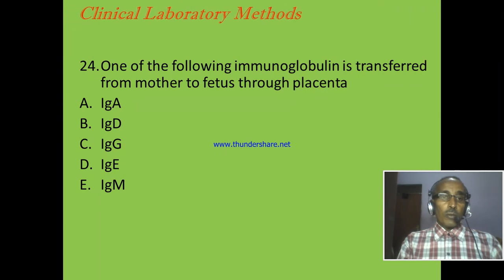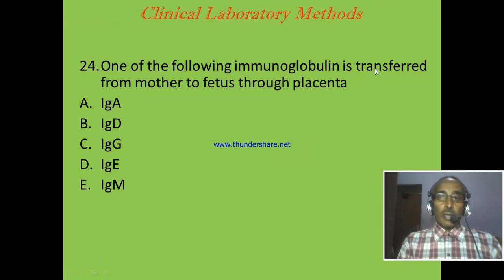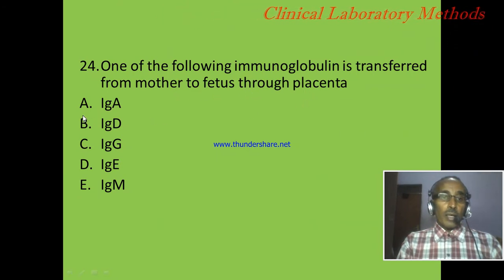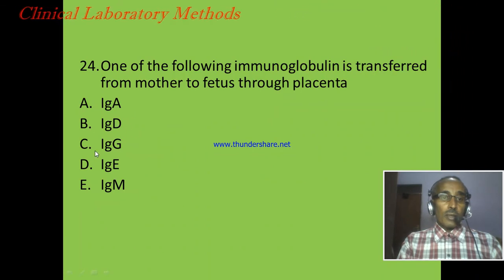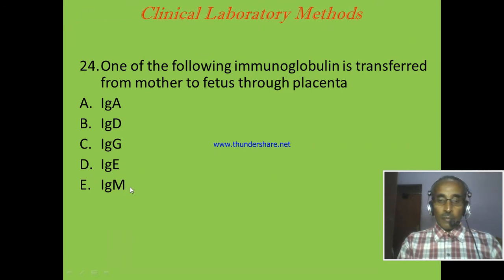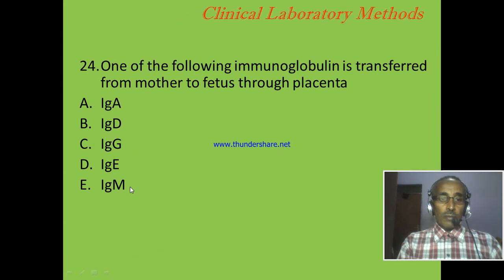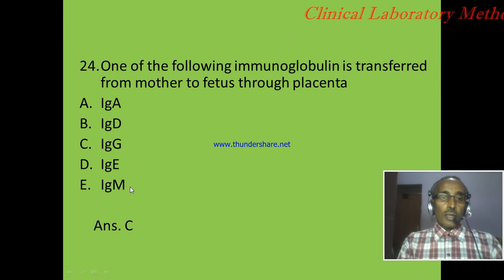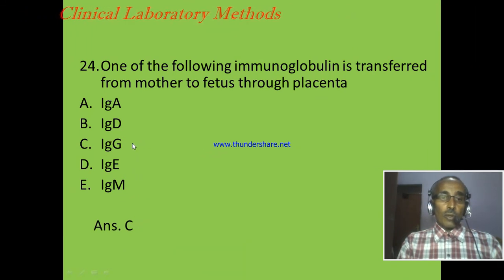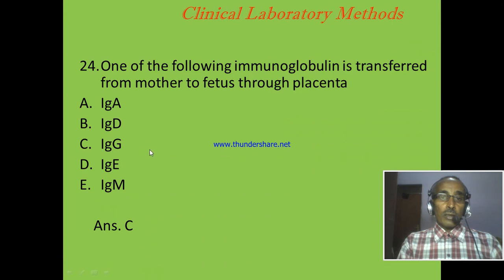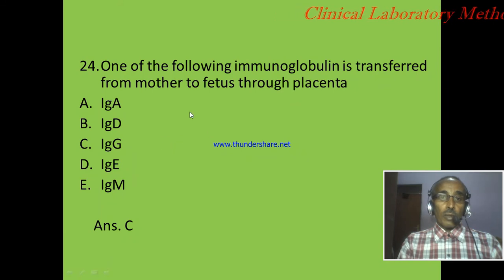Question 24: Which one of the following immunoglobulins is transferred from mother to fetus through the placenta? A: IgA, B: IgD, C: IgG, D: IgE, E: IgM. The correct answer is C: IgG, because IgG is the smallest antibody and it can cross the placenta from the mother to the fetus to protect the fetus from infection.